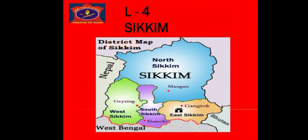Sikkim is a state in northeastern India. It borders Tibet in the north and northeast, Bhutan in the east, Nepal in the west and West Bengal in the south. Sikkim is also close to India's Siliguri Corridor near Bangladesh. Sikkim is known for its biodiversity, subtropical climate and beautiful tourist places. Let us read more about this beautiful state in the upcoming chapter.